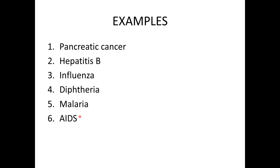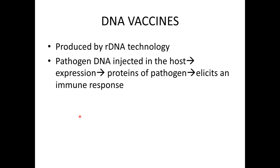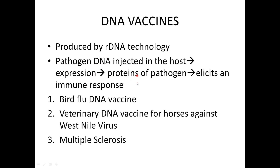DNA vaccines are produced by rDNA technology. The pathogenic DNA, in the form of the DNA vaccine, is injected into the host. The DNA gets expressed and pathogen proteins are produced, which elicit an immune response. Different DNA vaccines include those for bird flu, West Nile virus, and multiple sclerosis.